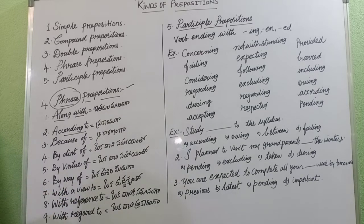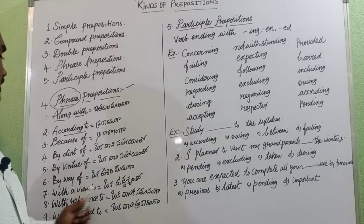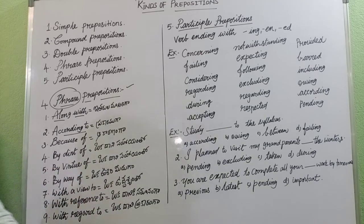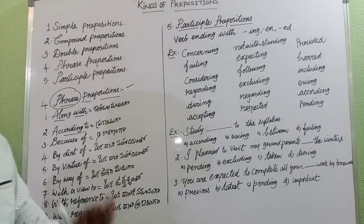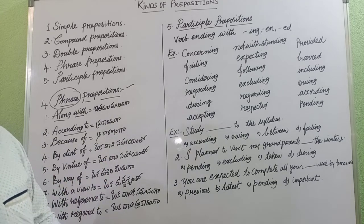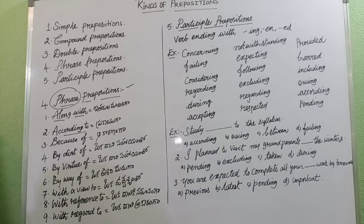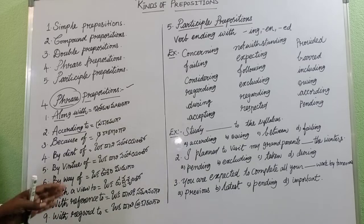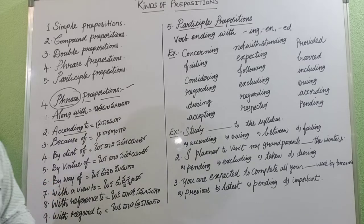Next is 'with a view to' — 'He is building a house with a view to sell it.' Another example: 'He is studying hard with a view to score top marks.' So 'with a view to' means with the purpose or intention of doing something.